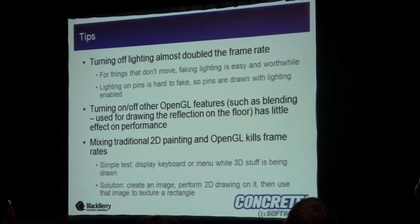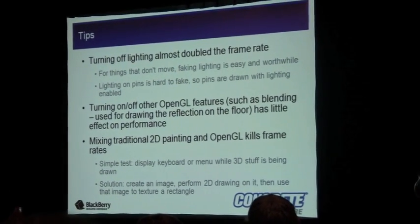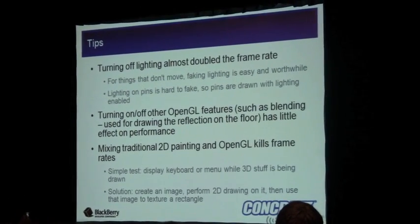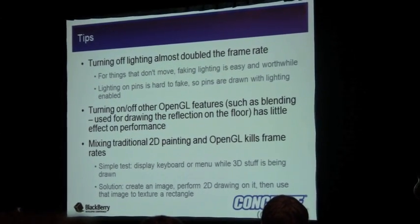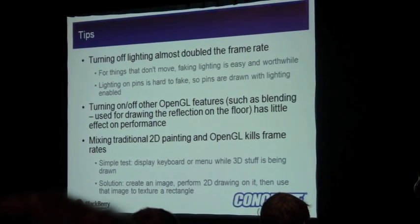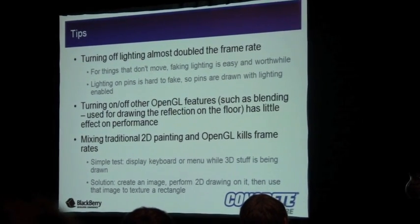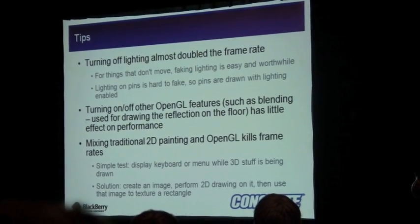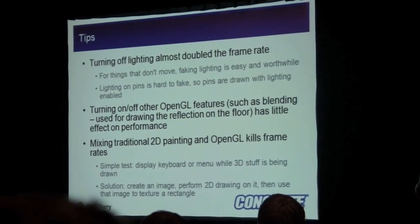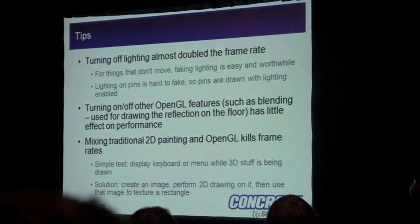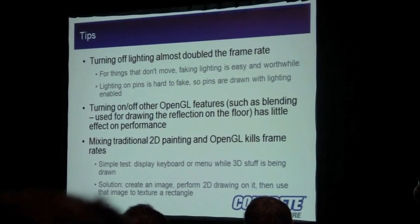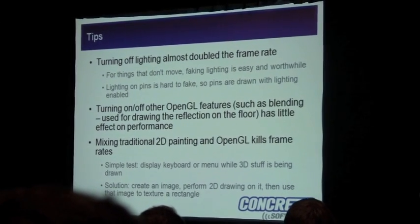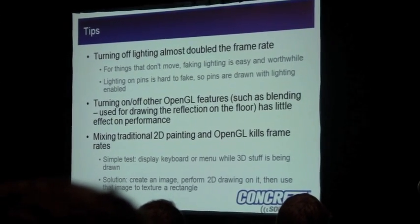Also the lighting — we just use lighting for the pins, and anything else that's static, we create the lighting effect inside the images themselves. We found that turning some other OpenGL features on and off, like blending — you noticed the reflection on the floor of the ball rolling and the pins — actually didn't take much of a performance hit. And one big thing: mixing 2D and OpenGL was a big performance hit. Our solution was to create the image, perform 2D drawing on that 3D image, and then put the text right on the rectangle.